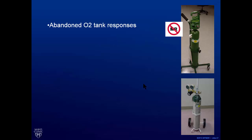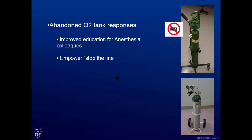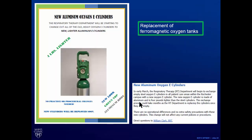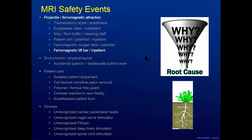We used this to our advantage. We needed to improve our education of anesthesia colleagues who left the tank there, and we let it be known that anyone who sees such a thing should stop the line. We used this as our way to get our foot in the door to say we need to get ferromagnetic oxygen tanks out of our shop at Mayo Clinic. We got administration's ear and were able to get this through. The kicker is the carts need adapting — aluminum tanks are three-eighths of an inch different in diameter — but you can sell it on the ergonomic benefits since aluminum tanks are much lighter. Nursing loved it, and that helped us get buy-in. By and large, we've gotten the ferromagnetic tanks out of our place.